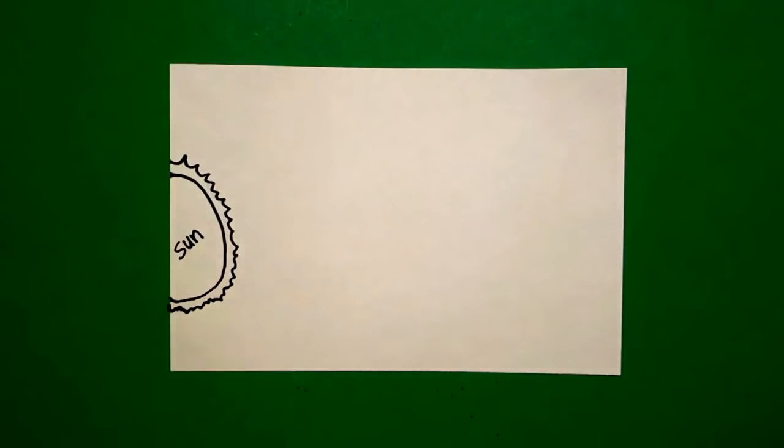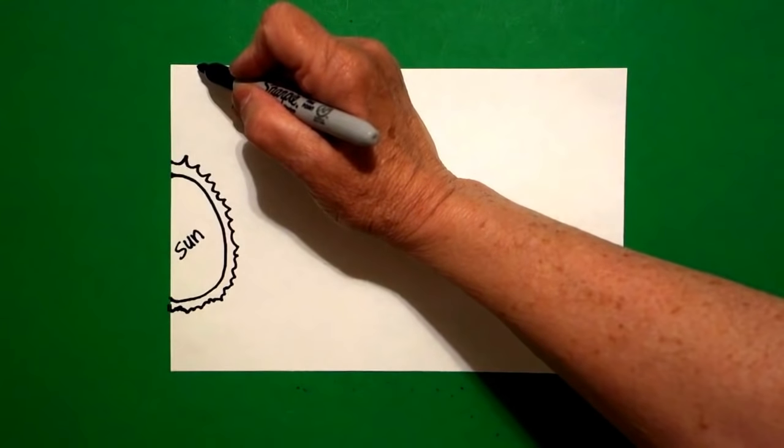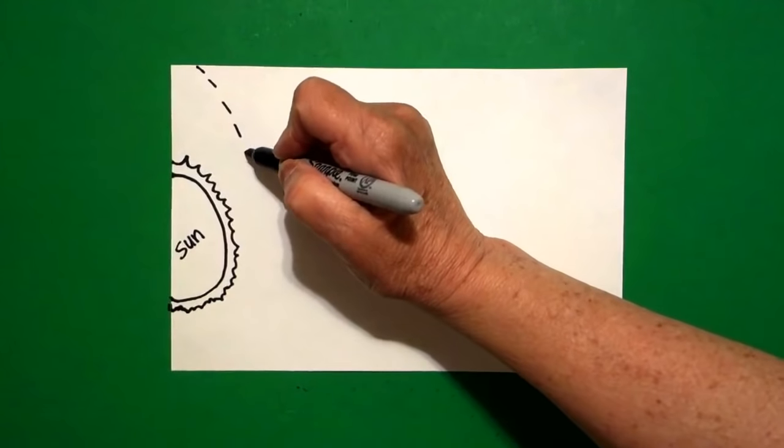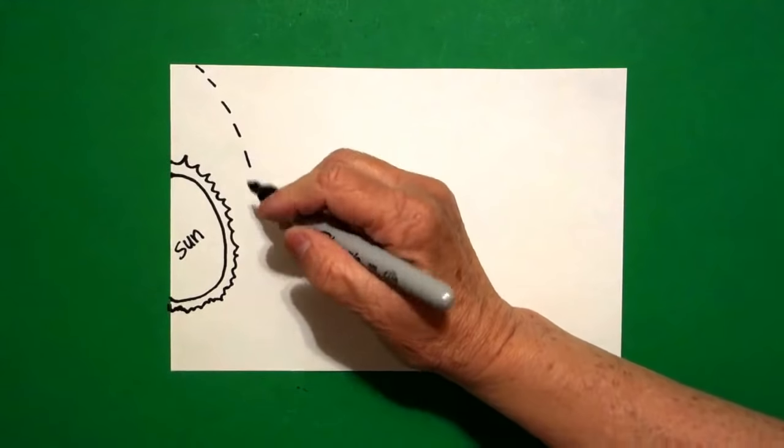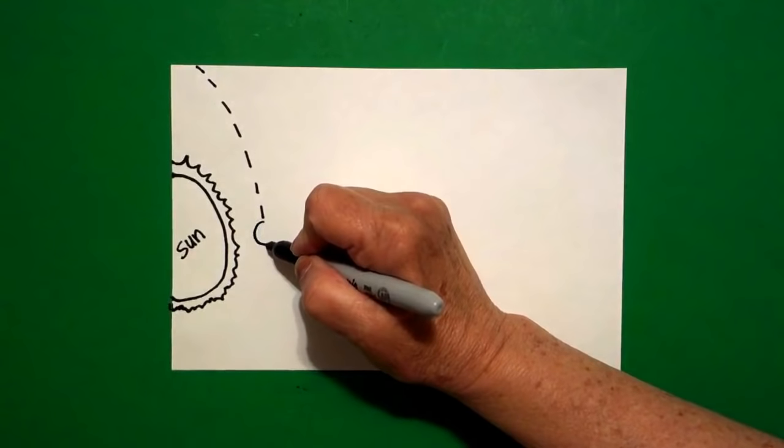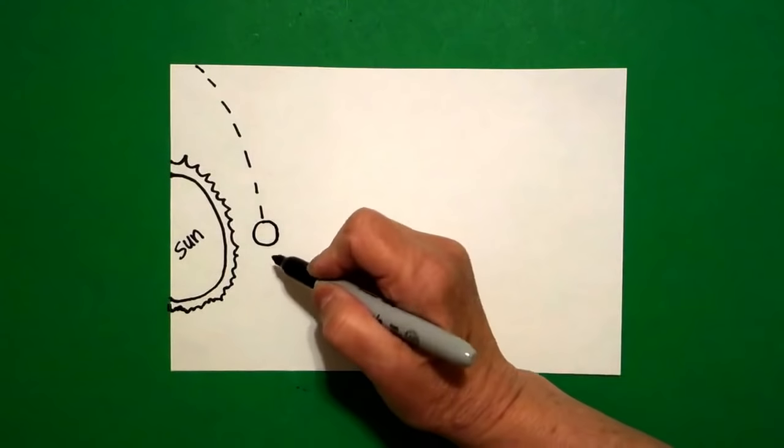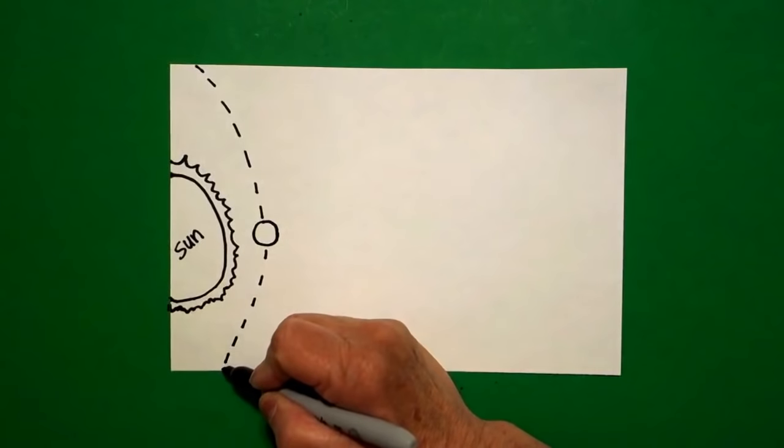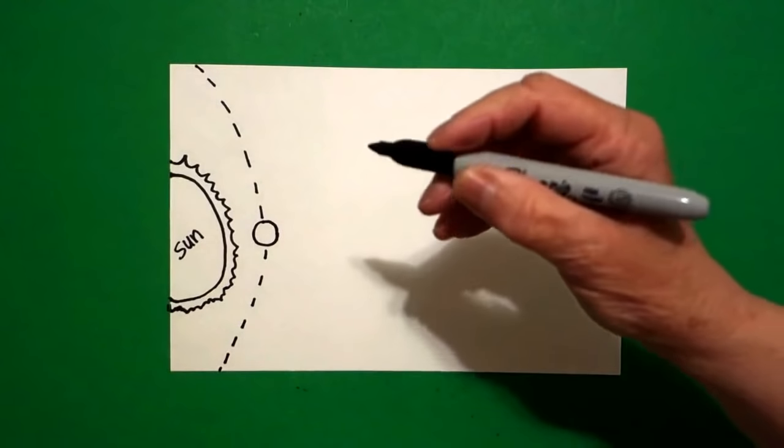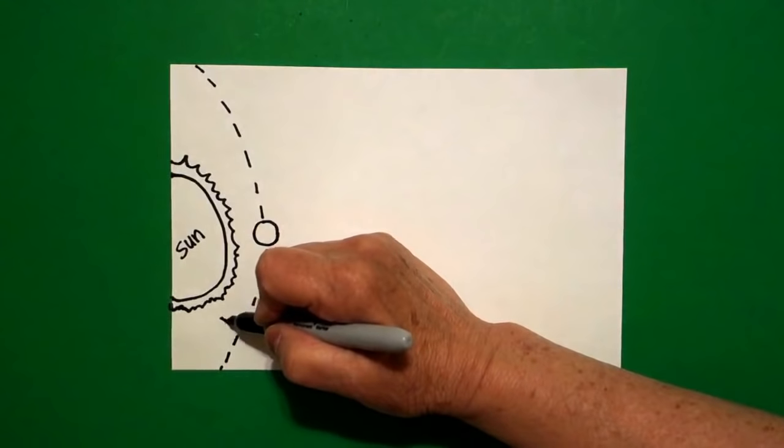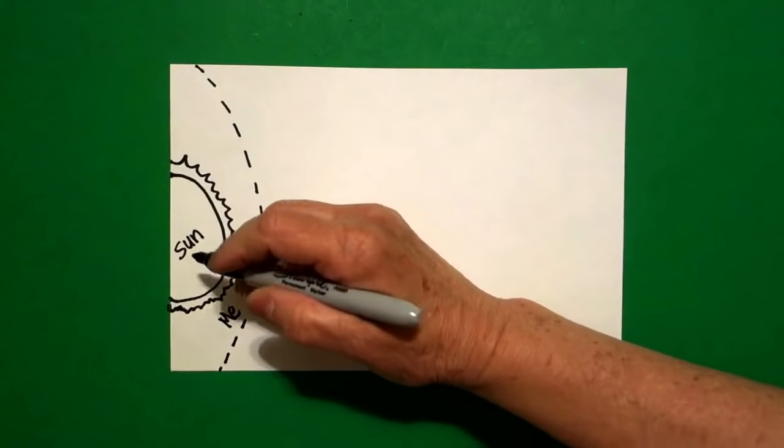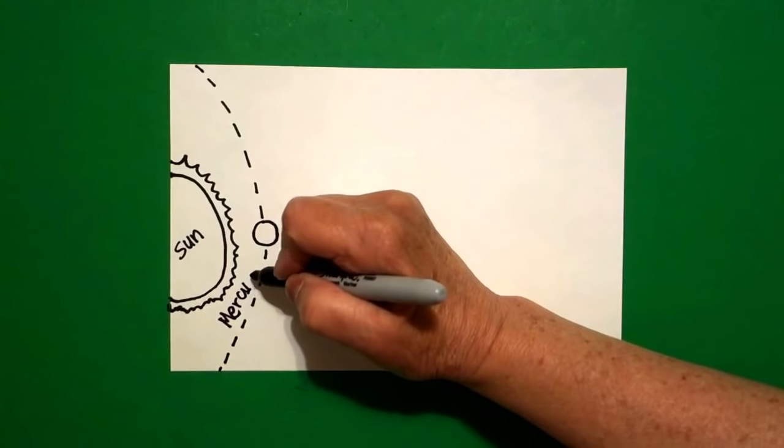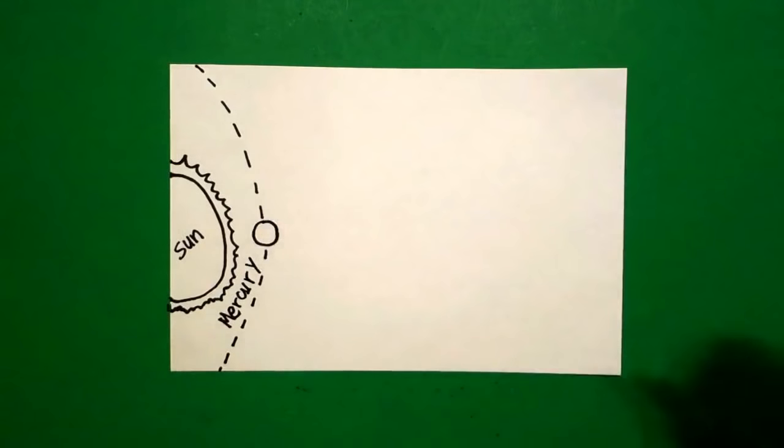Now, we don't have dotted lines in outer space, but I'm going to use a dotted line in order to keep my planets equal in the distance. So this first dotted line, I just drew a baby circle, and this is Mercury. M-E-R-C-U-R-Y. Mercury.